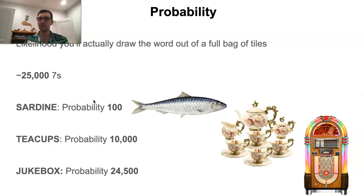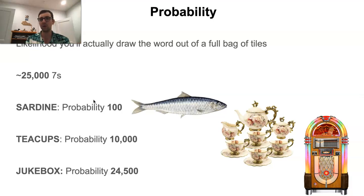This pretty much covers the concept of probability. When you study, the key is to use probability to judge which words are going to be more useful. You want to start your bingo study with the most probable words, and only once you have a pretty solid grasp on those should you start moving on to lower probability words. In general, if you have a word that's more probable, it's going to come up more often in games, and therefore it's a word that's more valuable to know for tournament Scrabble purposes.